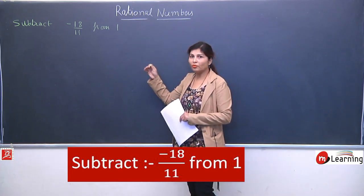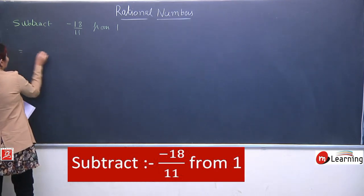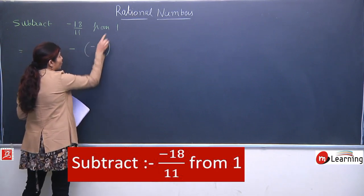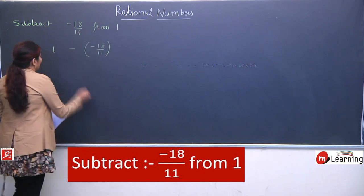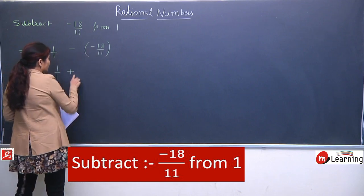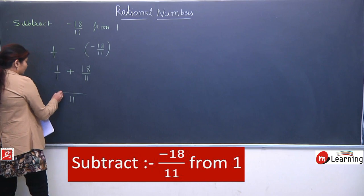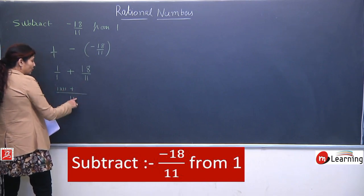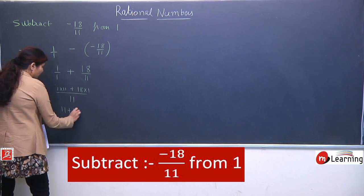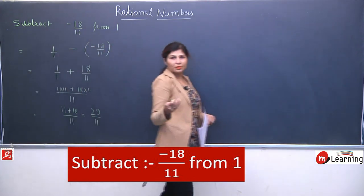The first question is: subtract minus 18 upon 11 from 1. When we see 'from', we need to take the second term as the first term. So we write 1 minus, and since we need to subtract minus 18/11, it becomes 1 minus (minus 18/11). Minus minus is plus, so it becomes 18 by 11. We put 1 in the denominator and take LCM of 1 and 11, which is 11. So we get 11 plus 18 upon 11, giving a final answer of 29 upon 11.